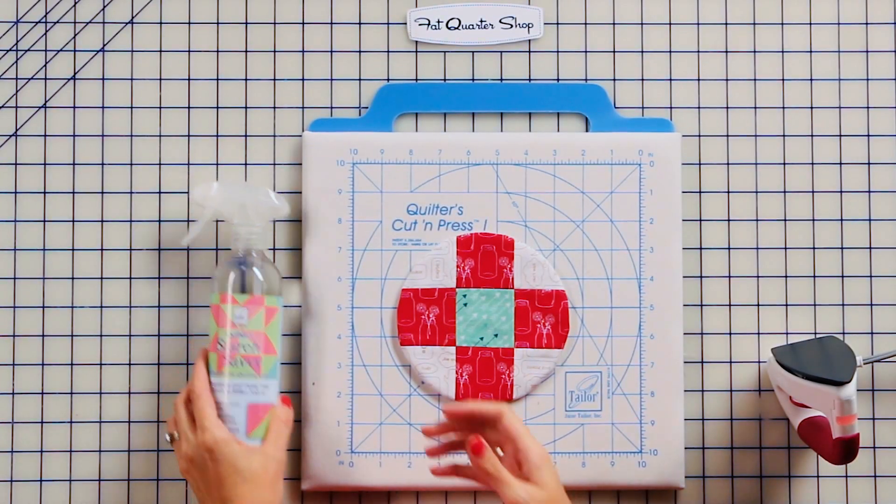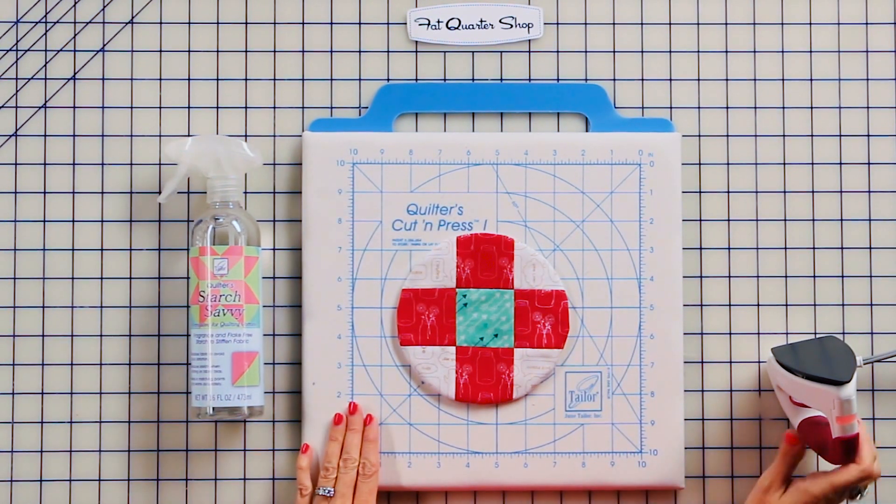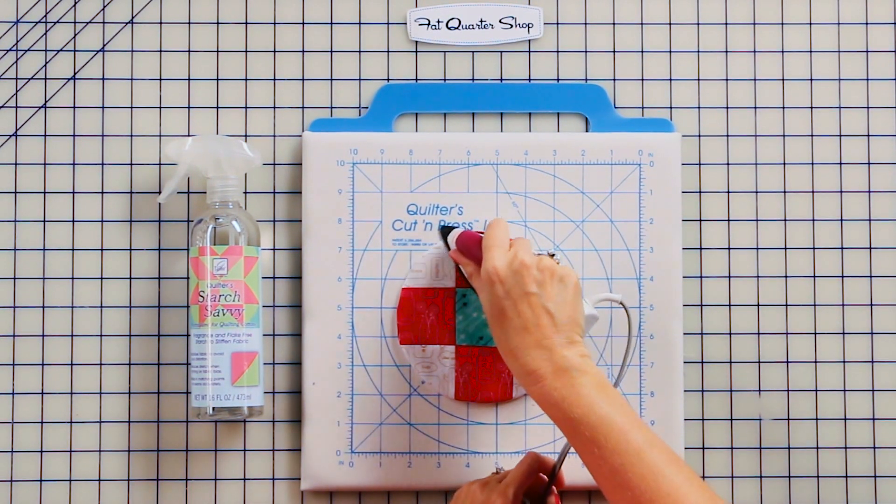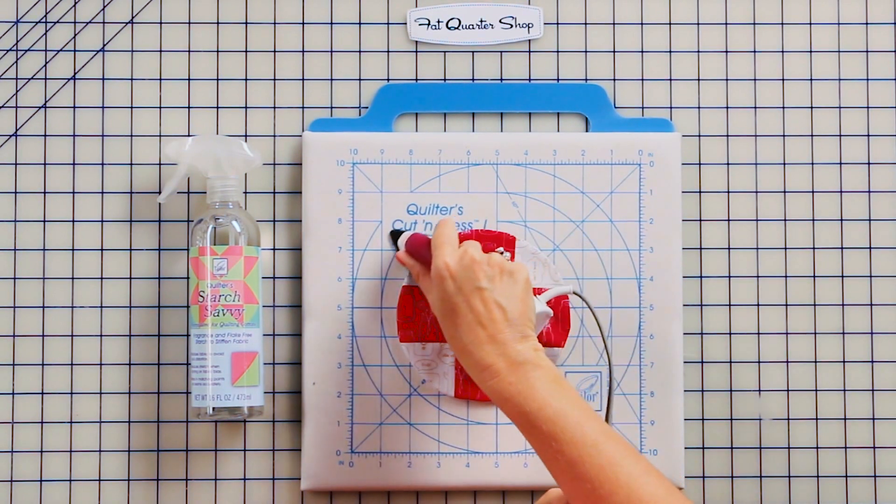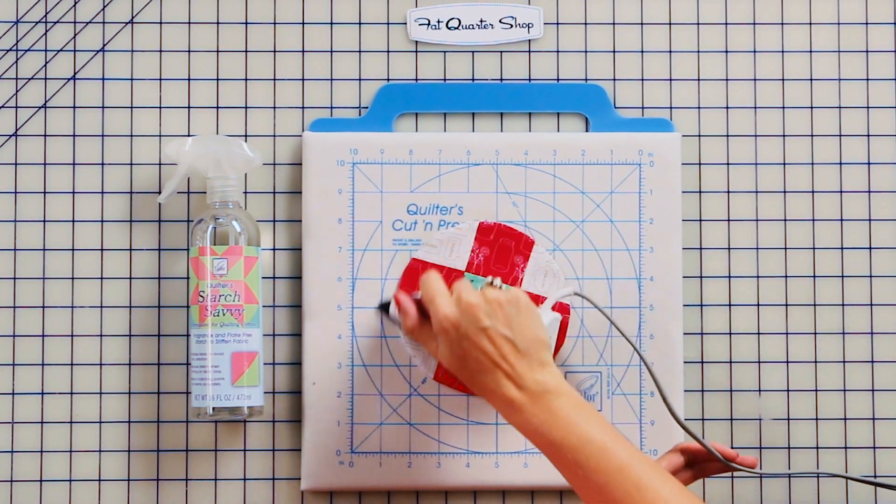Now to iron, I'm going to gently start with the Starch Savvy, and then I'm just going to press. And when you're pressing, it just kind of pushes everything to the edge, and now you've got a perfect circle.